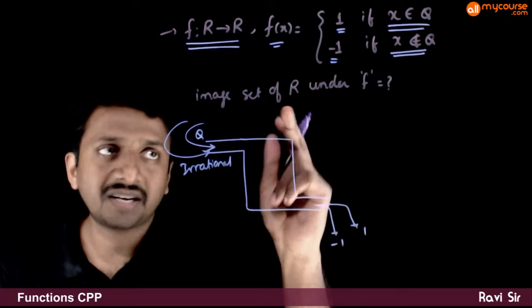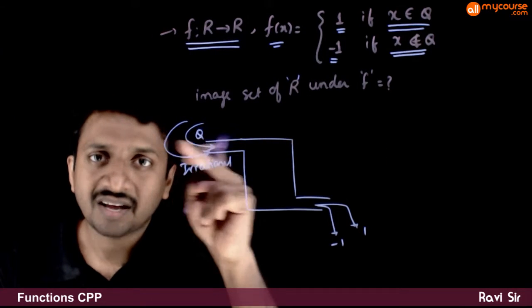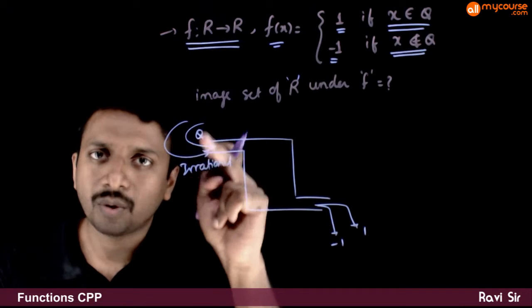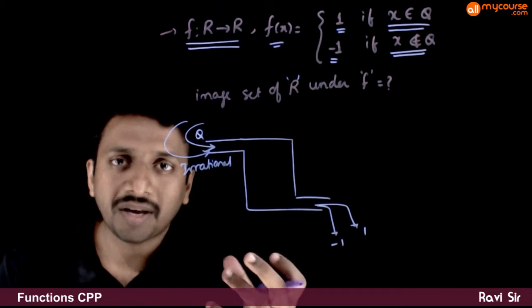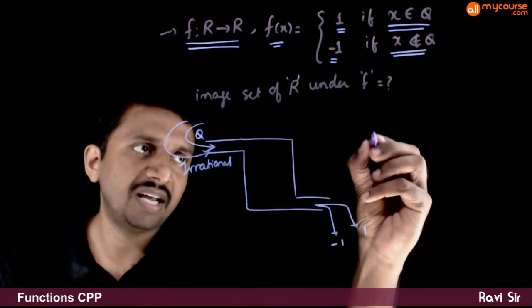So, the question is, what is the image set of R under f? That is, as different real numbers go inside this machine, what is the set of images that comes out? Obviously, the answer is the range.